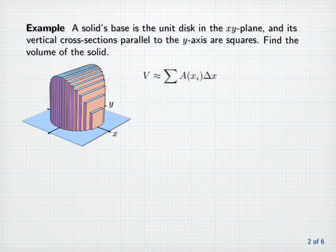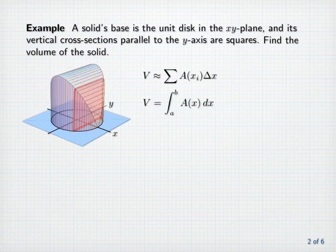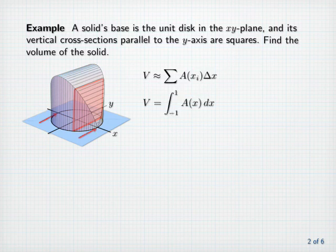Approximations of the solid look like thin square blocks. Summing the volumes of such blocks gives an approximation of the volume, and as the thickness delta x approaches zero, these approximations approach the integral of the cross-sectional area. Since the base of the solid extends from minus one to one on the x-axis, the limits of integration will be minus one to one. So our job now is to find a formula for the cross-sectional area A of x.